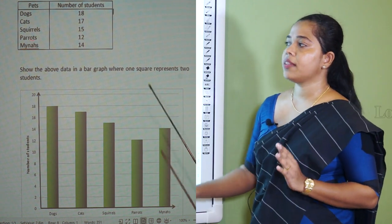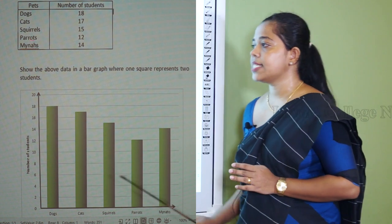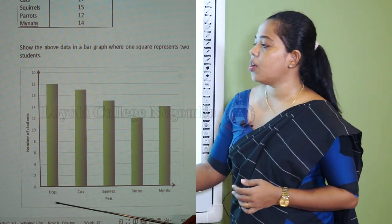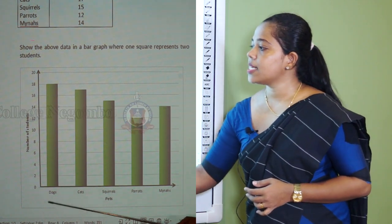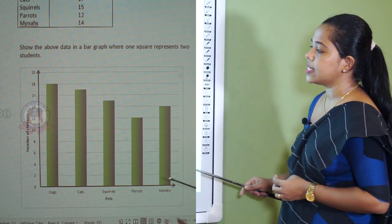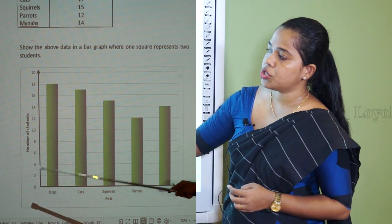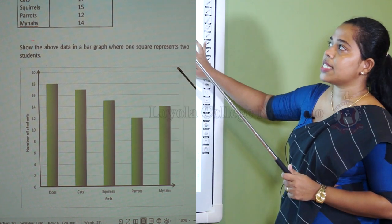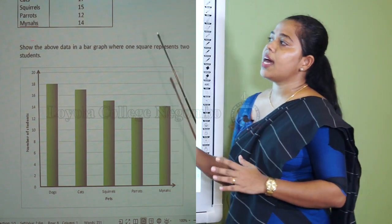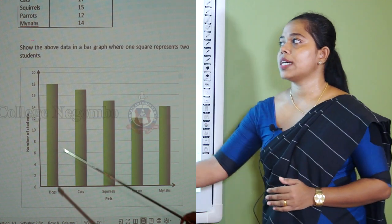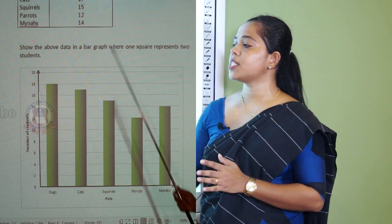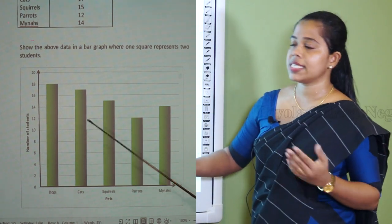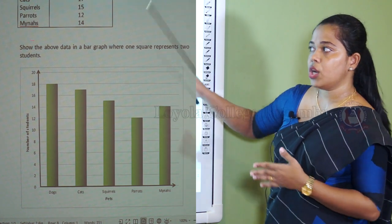Keep in mind all the points necessary to draw a graph: draw the axes, name the vertical axis as number of students and the horizontal axis as pets, and name all the categories using the names of the pet animals — dogs, cats, squirrels, parrots, and minors. Number the vertical axis 2 by 2. When deciding which scale to take, look at the larger number and decide. If you take 1 by 1, to show 18 students for dogs you would need 18 squares, making the graph too large.